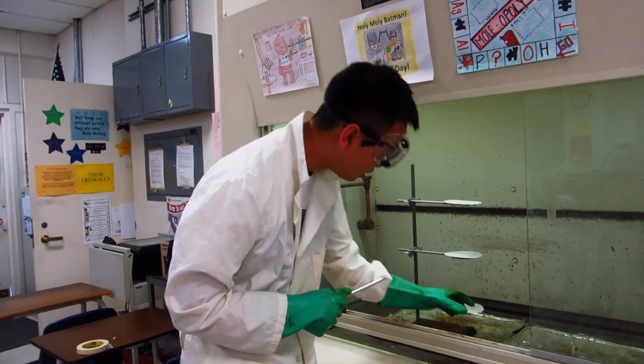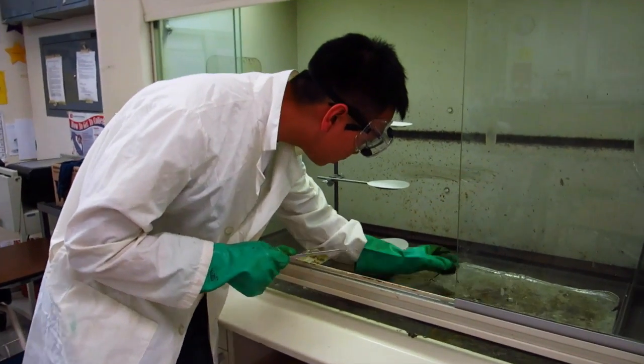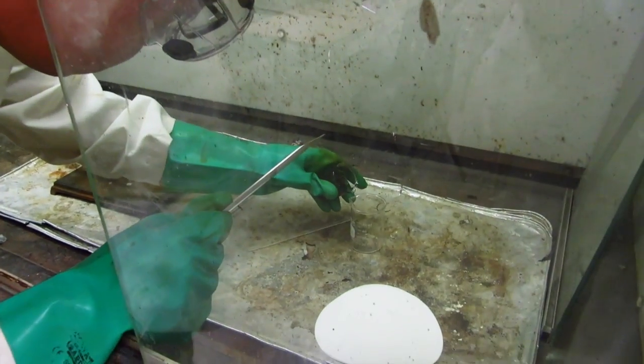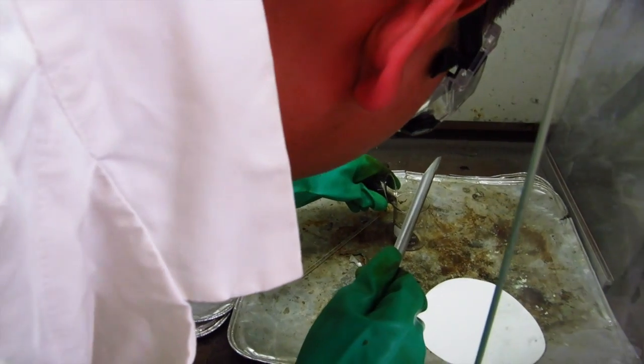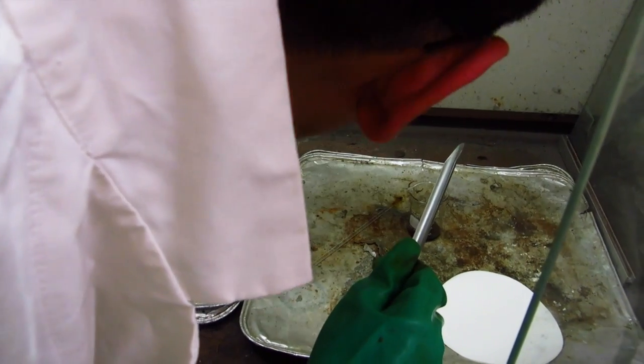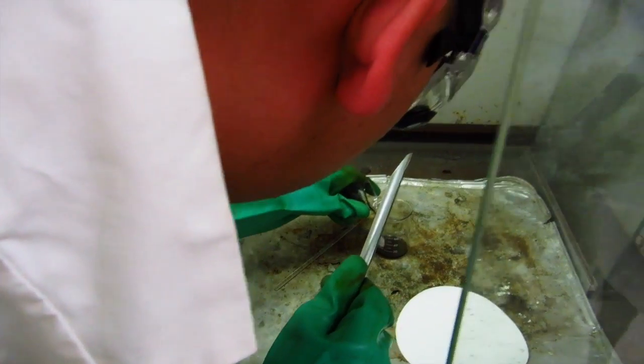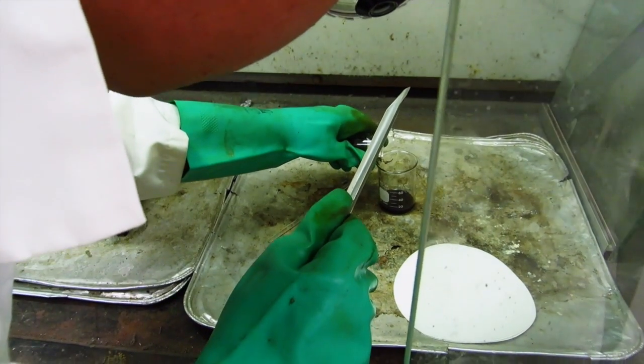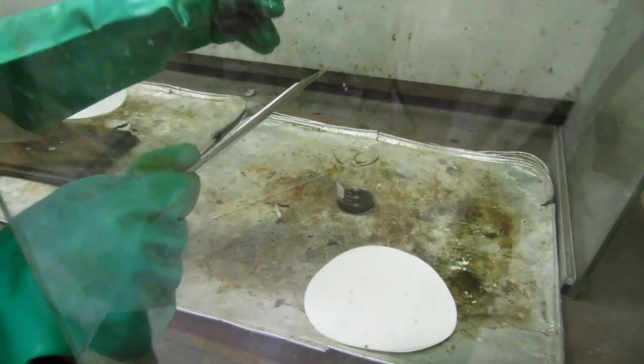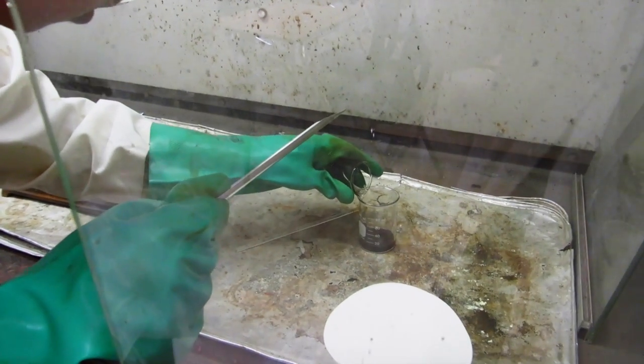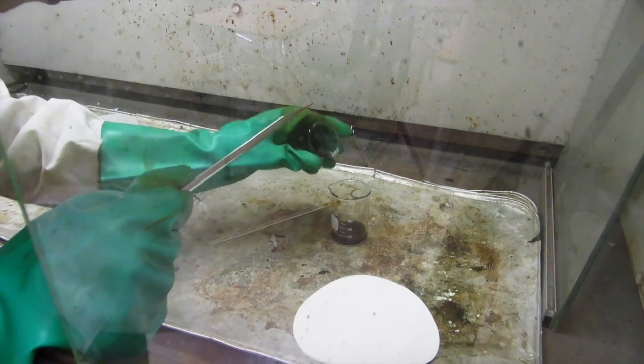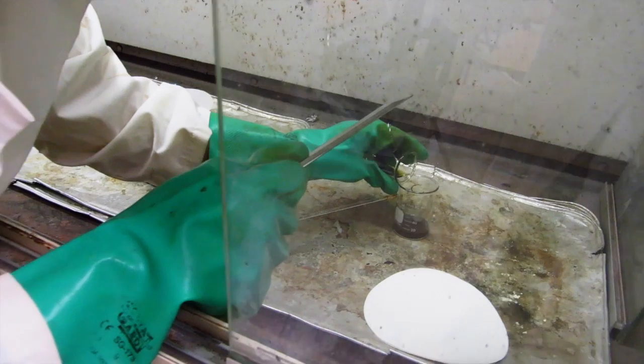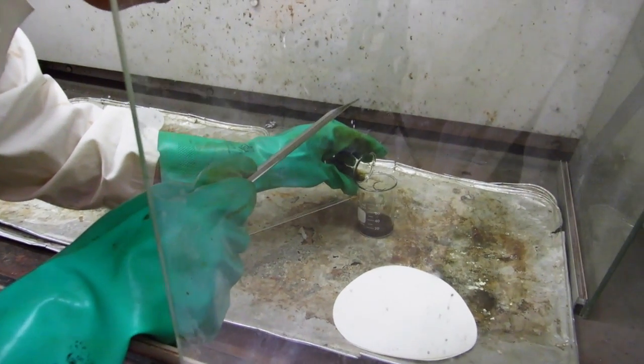So I'll be decanting the supernatant now by pouring out the liquid into this beaker here and making sure that the solid stays in the beaker. And the solid should be stuck to the bottom, actually. Okay. So we're going to let this dry out.